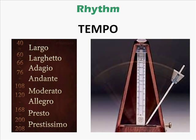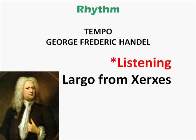Largo is slow. Prestissimo is fast. You also see here a metronome, which ticks the beat at whatever number of beats per minute you like. If you have an iPod, you can get a free app of a metronome that looks just like this one. Listen to Handel's Largo from the opera Xerxes and note the slow pace at which this song moves.